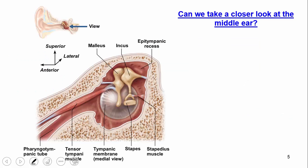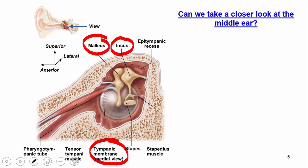Looking further at the middle ear, this is a zoomed-up picture of what we saw before. We have the tympanic membrane — this is a medial view — which is your eardrum. And again, we have those three bones of the middle ear: the malleus, the incus, and the stapes. You'll also notice different muscles and tendons connecting these bones to other structures of the ear, all of which are important in maintaining the integrity of the middle ear.